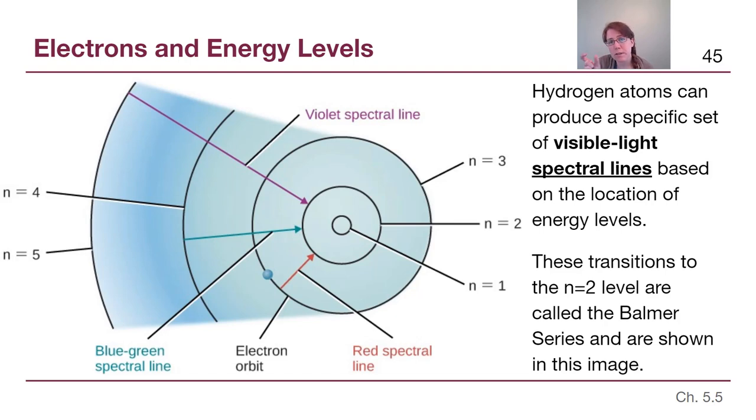Now hydrogen atoms produce a specific set of visible light spectral lines based on where those particular energy levels are, and they're not drawn that carefully in this particular picture from our textbook. But if we look at the three arrows drawn here, the purple arrow is representing an electron that has gone back down from n equals 5 down to n equals 2 and emitted a photon that would look visibly violet to our eyes. If instead the electron does a smaller jump, it's going to emit less energy, and so it emits a kind of blue-green color if it jumps from n equals 4 down to n equals 2. And then if it emits even less energy because of a smaller gap going from 3 to 2, it might emit a red line, visibly red to us.